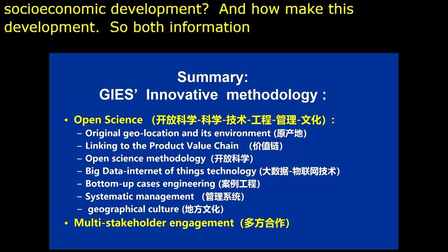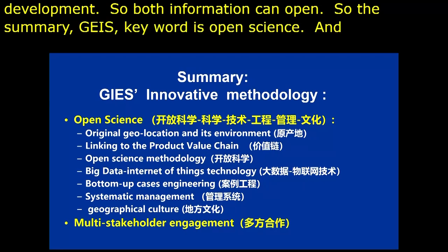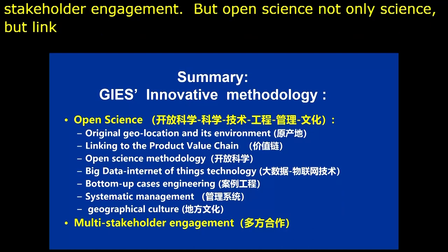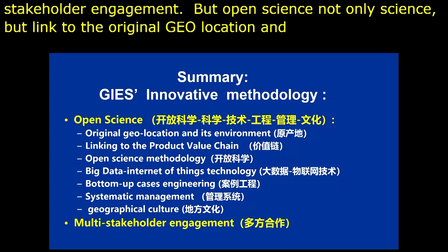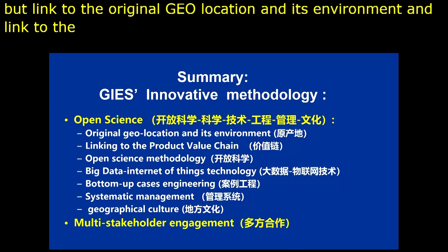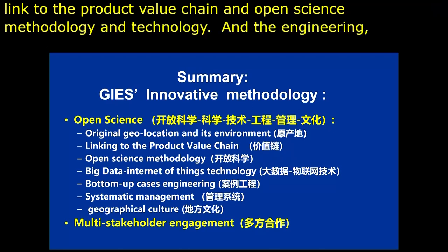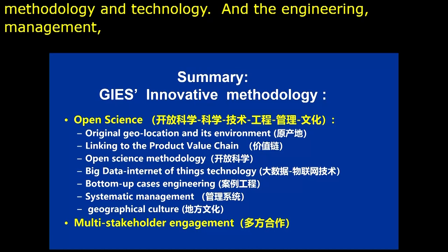In summary, GIES's innovative methodology — the keyword is open science and multi-stakeholder engagement. Open science is not only science, but linked to the original geolocation and its environment, linked to the product value chain, open science methodology, technology, engineering, management, and geographical culture. Thank you very much.